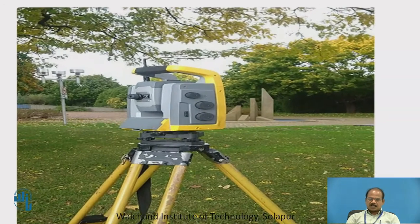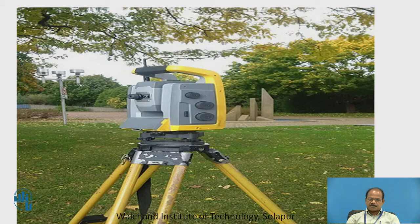This is the conventional total station. As you can see, the tripod is there, and at the center of the tripod we can attach a plumb bob or use an optical plummet to ensure the vertical axis of the total station is exactly above the occupied point. In addition, leveling is done roughly using the circular bubble tube and thereafter precisely using the plate bubble tube.